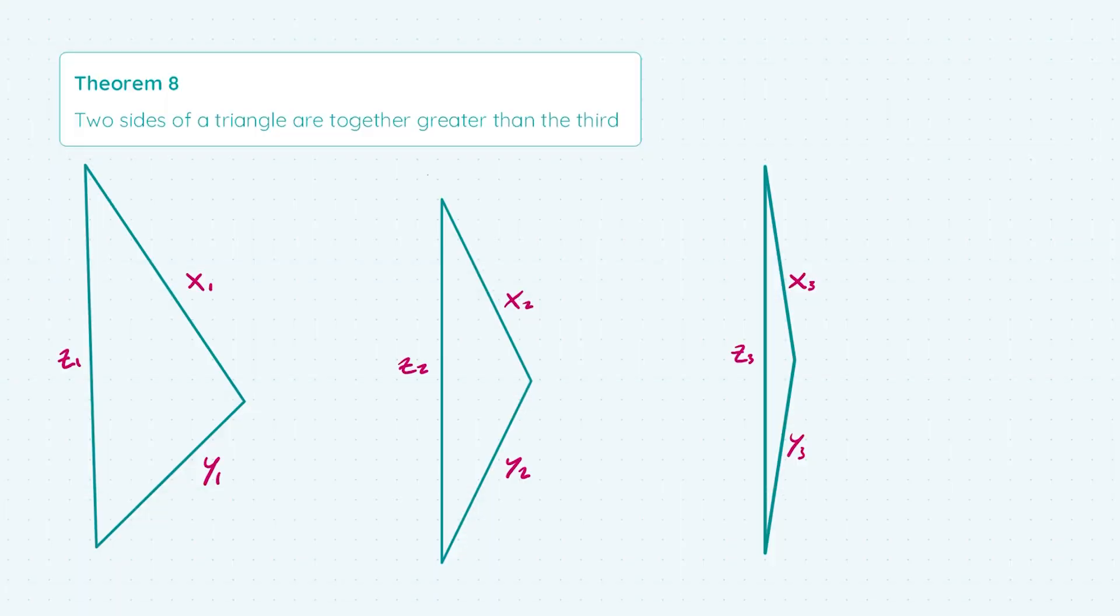This is a fairly fundamental theorem in geometry and all it's going to mean is that for each of these triangles and indeed for any triangle, regardless of the side lengths or the angles, if you add the value of two sides together it's always going to exceed the length of the third side.